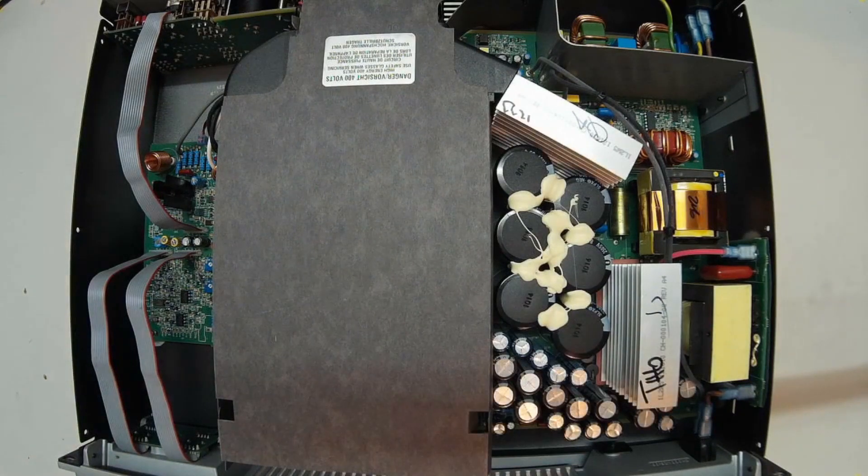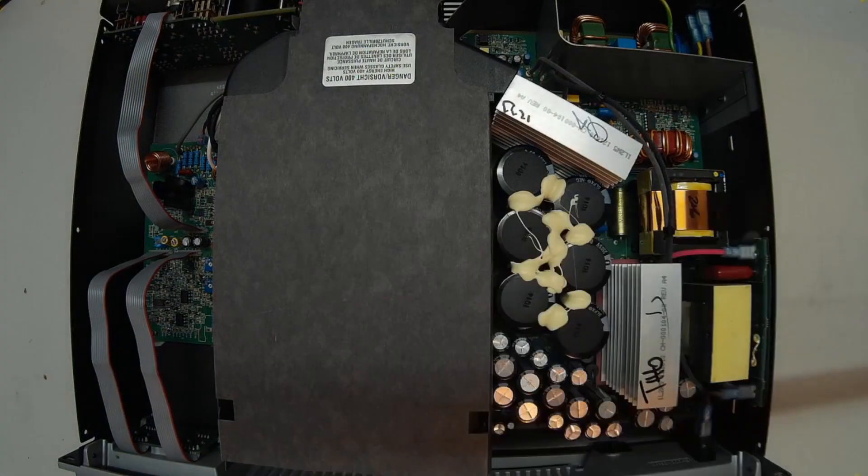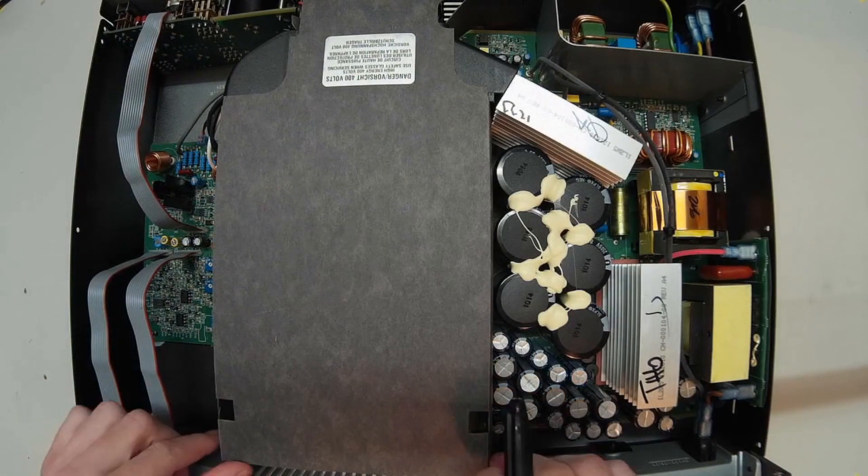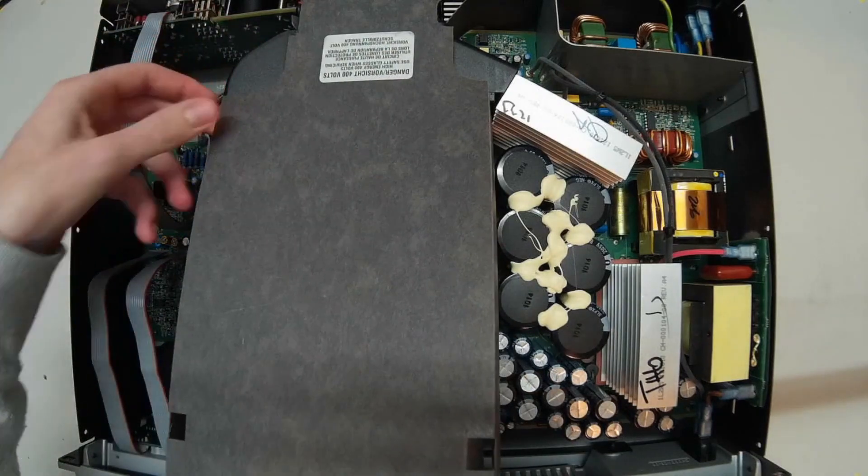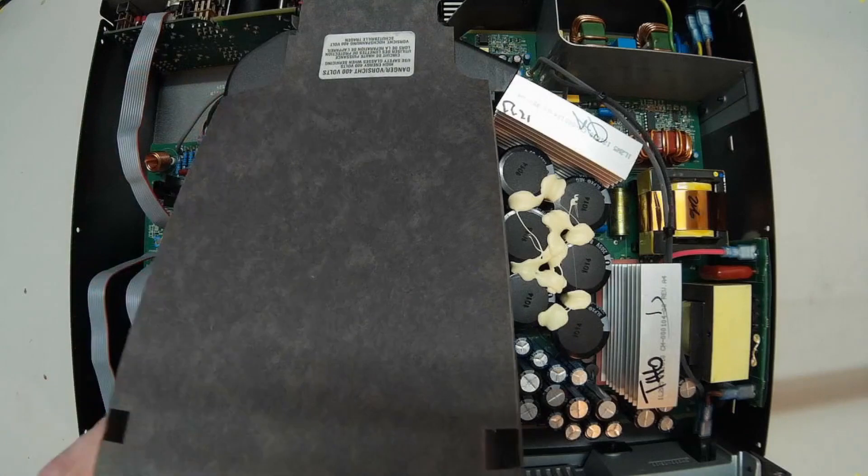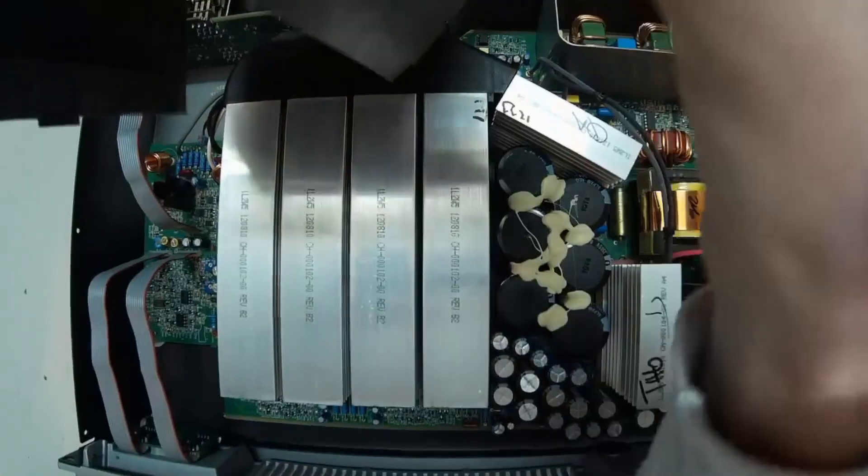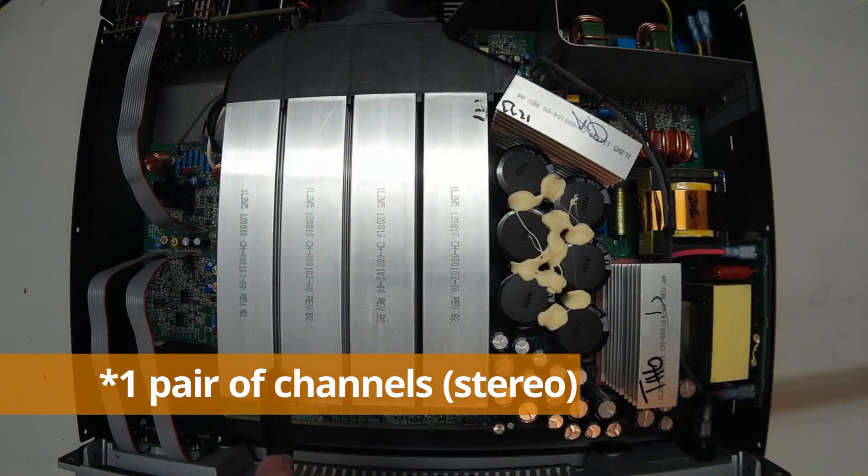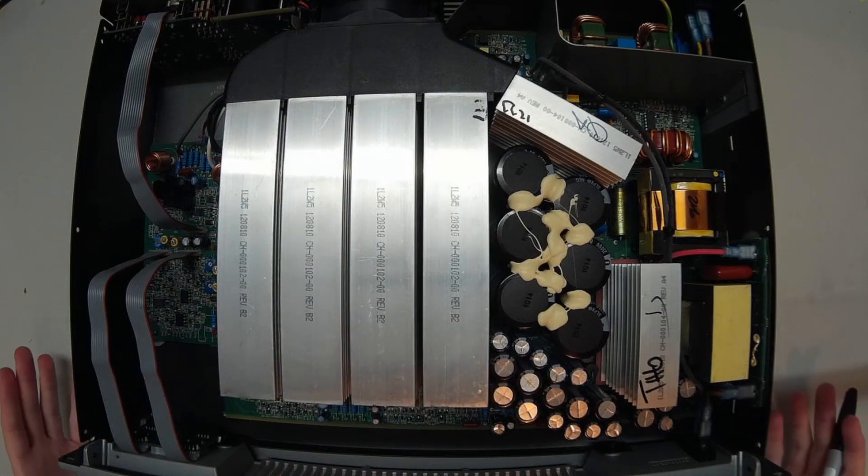So one of the first things you might notice, I mentioned this big bulky transformer. As you can see, there is no big bulky transformer. It's also not hiding under this cover, these are just the heat sinks for the two pairs of stereo channels. So yeah, there's no big heavy bulky transformer.